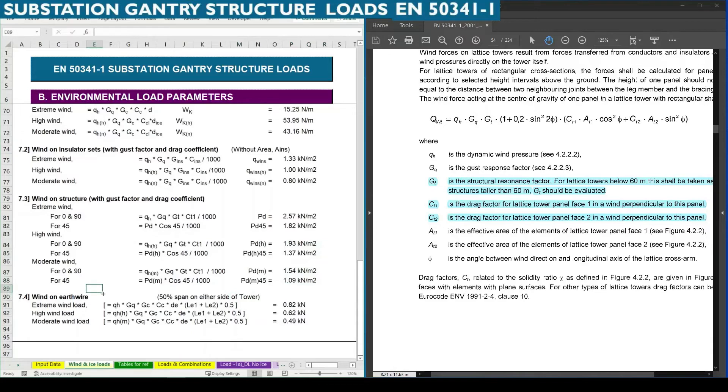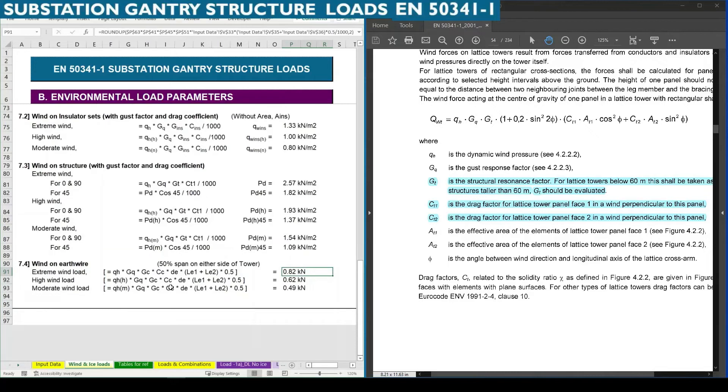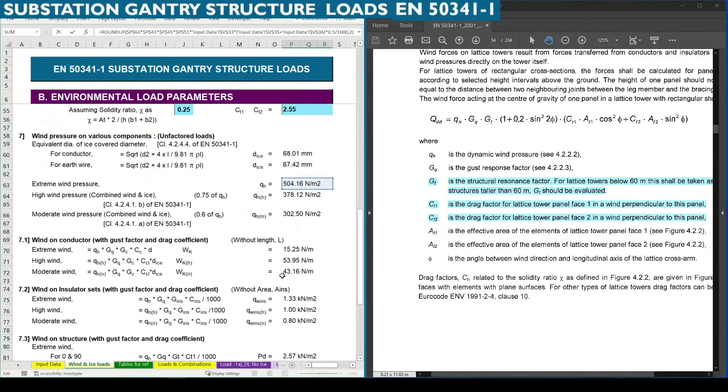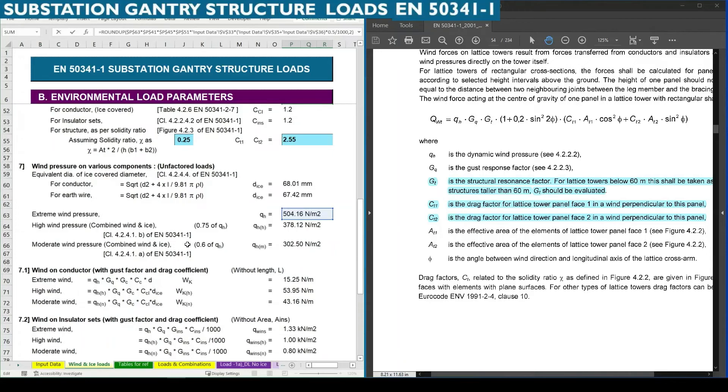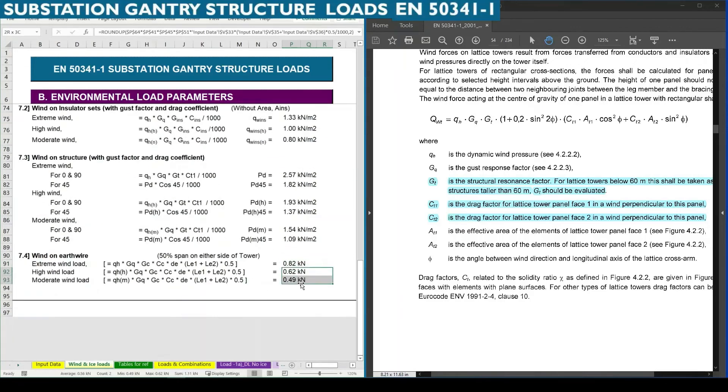Finally we are going to apply the same formula for conductor. Here we are directly calculating the value by considering the span of both conductors. LE1 and LE2 are the spans depending upon the respective pressure: extreme, high pressure, and moderate wind pressure for conductor. These values are going to change.